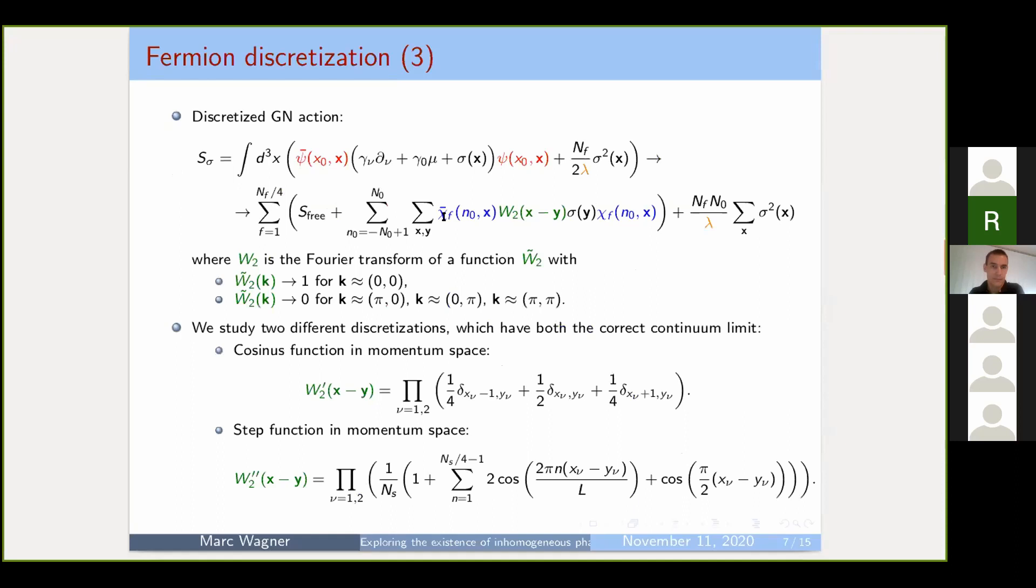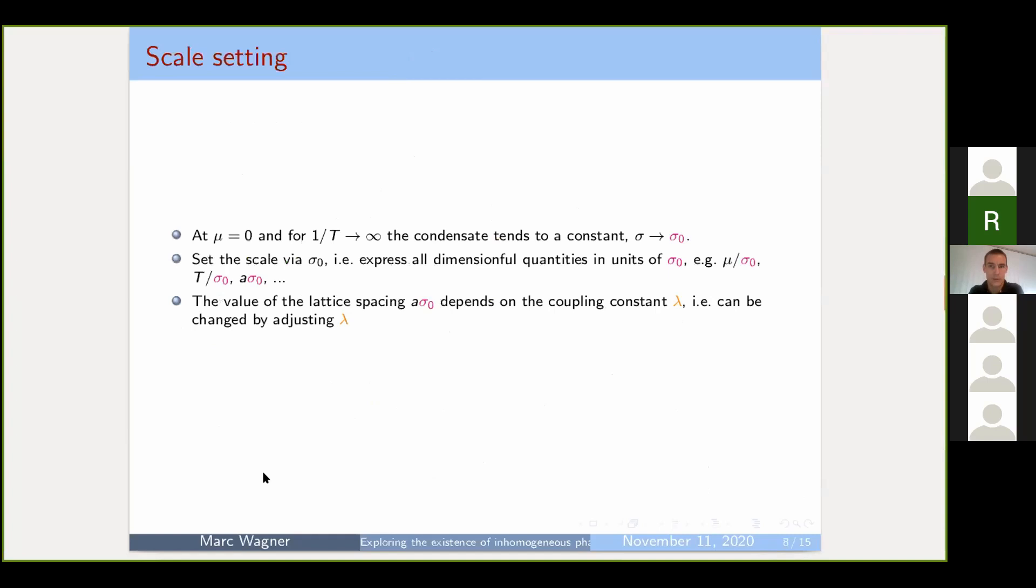I think we don't need to speak about this further—it's not a lattice conference. The only thing you should keep in mind is we have some degrees of freedom here in what kind of function w_2 to use. In a certain sense, you need to cut out the high momenta. We're using two different discretizations. With one discretization we cut it out smoothly with a cosine function, and the other discretization uses a sharp step function. We call them w' and w'' in the following—two different lattice regularizations or discretizations. For scale setting, we express everything in terms of sigma_0, the condensate at t equals zero and mu equals zero. As usual in lattice field theory, you can adjust the lattice spacing by the coupling constant.